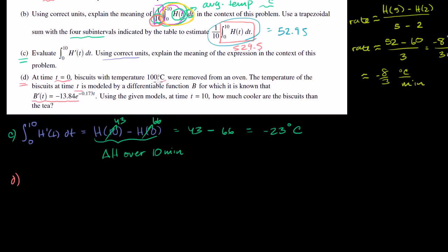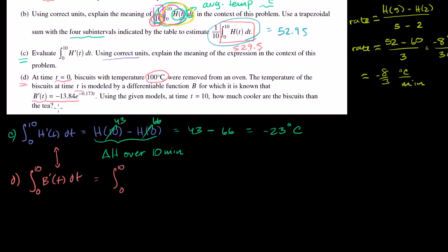The biscuits started at 100 degrees Celsius. We find their change in temperature over 10 minutes, which is the definite integral from 0 to 10 of B prime of t dt — the same pattern as before. B prime of t is negative 13.84 e to the negative 0.173t dt.